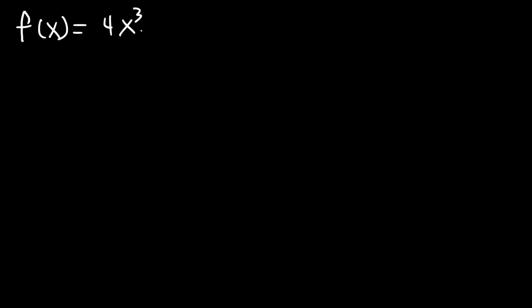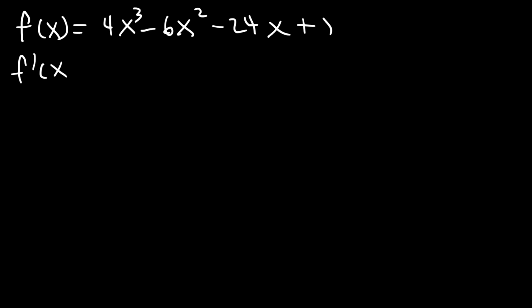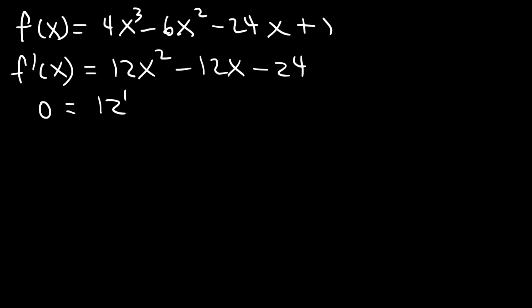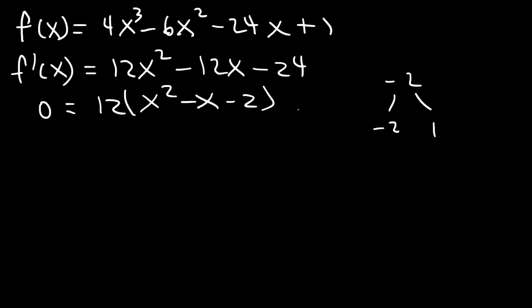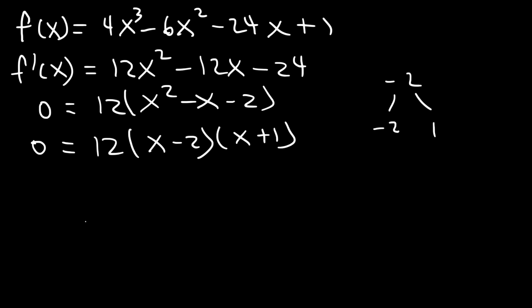Now it's your turn. Let's say f(x) = 4x³ - 6x² - 24x + 1. Use the second derivative test to determine the relative extremum. First, find the first derivative: 12x² - 12x - 24. Setting it equal to 0 and factoring out 12 gives x² - x - 2. Factoring: two numbers that multiply to -2 and add to -1 are -2 and 1, so it factors as (x - 2)(x + 1). The critical numbers are x = 2 and x = -1.